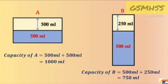For bottle B, if we fill 250 ml of water in the container, that means we already have 500 ml plus 250 ml, that is equal to 750 ml of water. Bottle A has a capacity of 1000 ml and Bottle B has a capacity of 750 ml.